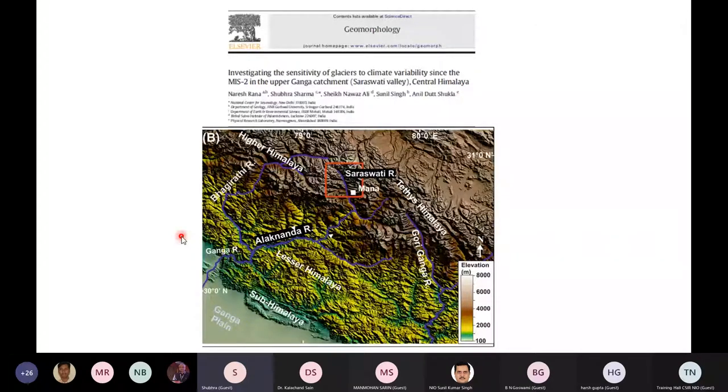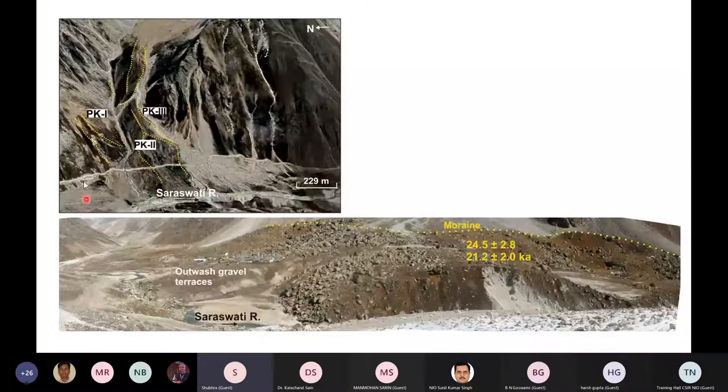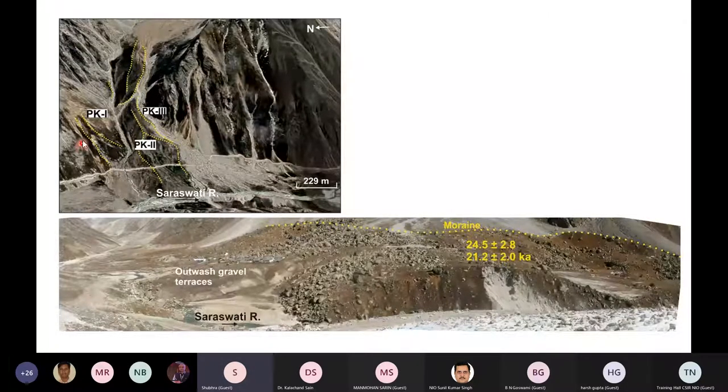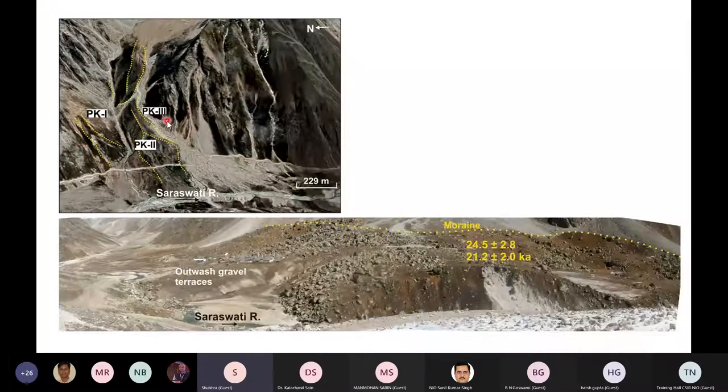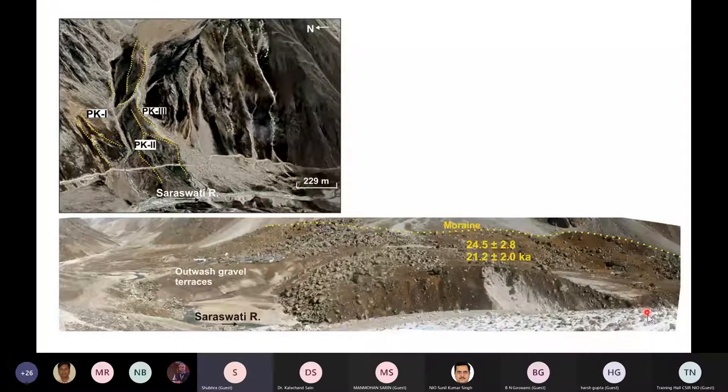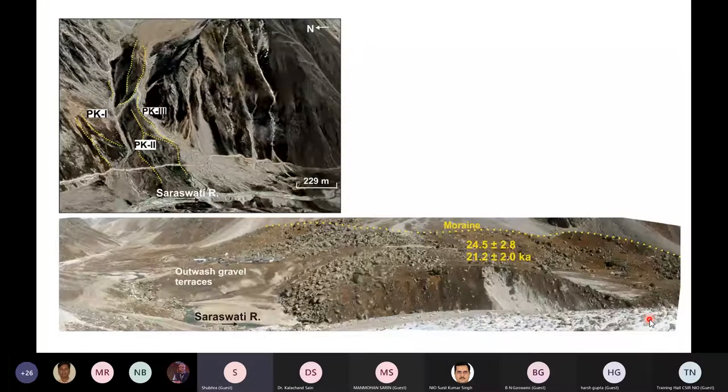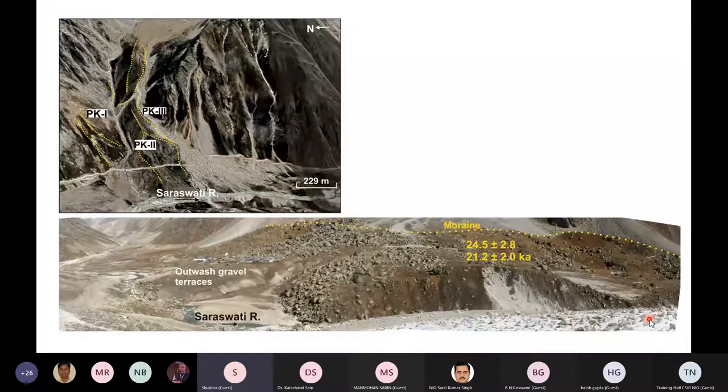So we occupied upper Ganga catchment in the otherwise monsoon dominated central Himalaya and see if we could get this kind of signature here also. So here I am showing Google imagery of Paschimi Kamet tributary valley. And again we could document three glacial advances here which are represented by PK-1, 2 and 3. The Paschimi Kamet one glacial advancement is the oldest one and we find the moraine corresponding to this much downstream in the trunk valley that you can see in this field photograph. And this event is again dated to the last glacial maxima implying that strengthened westerlies could trigger an advancement in this region also and monsoon perhaps did not trigger an advancement.